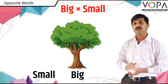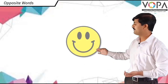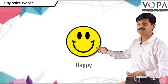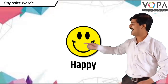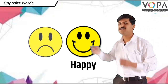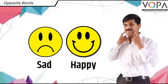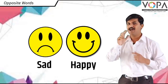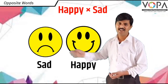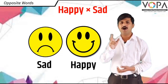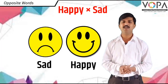Let's look at another example. See this smiley — this is a happy smiley and this is a sad smiley. Happy and sad are two opposite words. In Marathi: anandi ani dukhi — he duni opposite words ahet, mhanje ulat artha che shabda ahet.